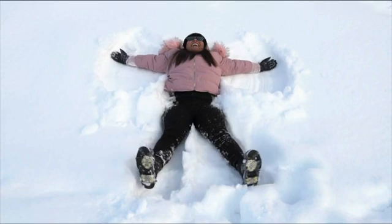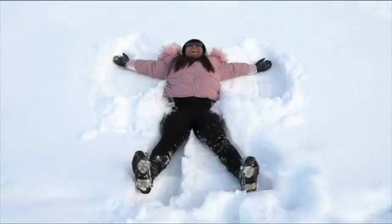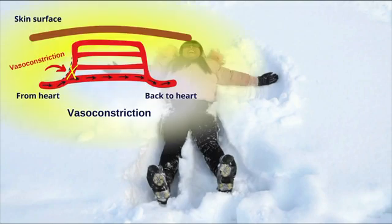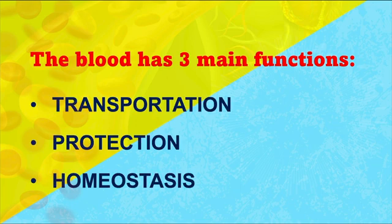Conversely, if you're in the cold — like playing in the snow — the blood gets routed to your core to keep things warmer. Blood also helps with homeostasis in other ways: there are proteins and compounds in the blood that help regulate and buffer the blood to maintain the pH inside the body. If things get out of balance, it can have a bunch of negative effects. But thanks to blood, we can be okay. So transportation, protection, and homeostasis — these are the three main functions of the blood.